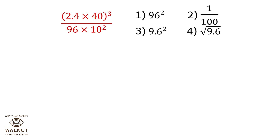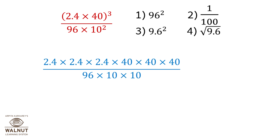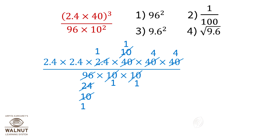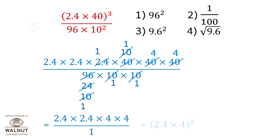2.4 multiplied by 40, whole cube, divided by 96 multiplied by 10 squared. Expanding: 2.4 × 2.4 × 2.4 × 40 × 40 × 40, divided by 96 × 10 × 10. This simplifies to 2.4 multiplied by 2.4 multiplied by 4 multiplied by 4, divided by 1, which equals 2.4 multiplied by 4, whole squared, which equals 9.6 whole squared.